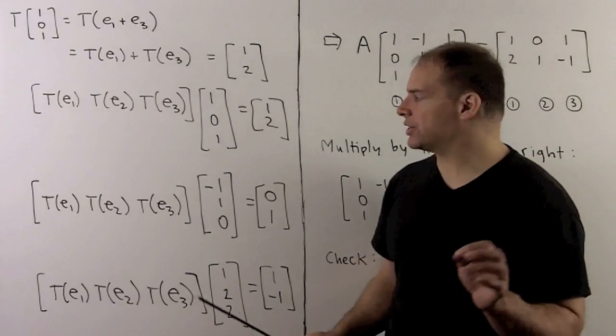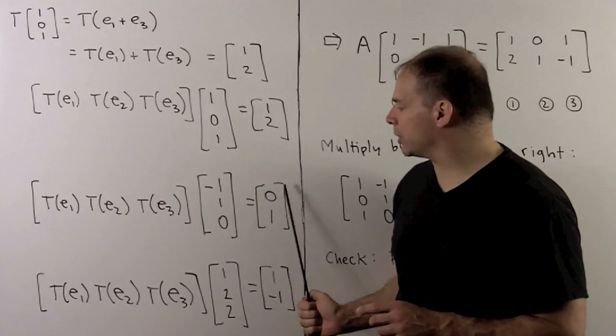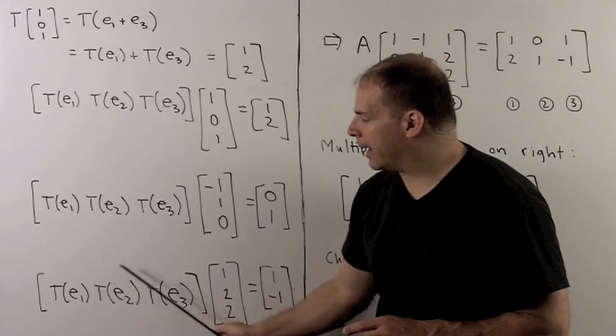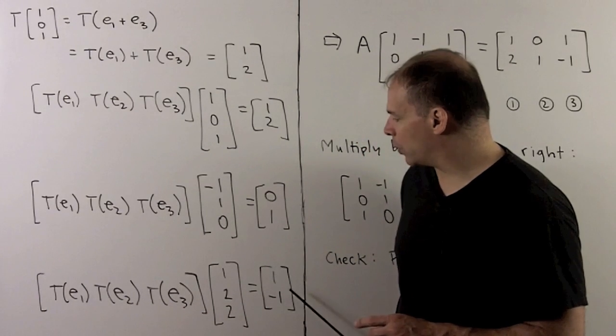Likewise, we go through the other two assumptions. So we have our A matrix times (-1,1,0) equal to (0,1). And our A matrix times (1,2,2) equal to (1,-1).